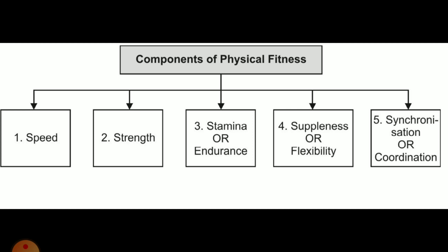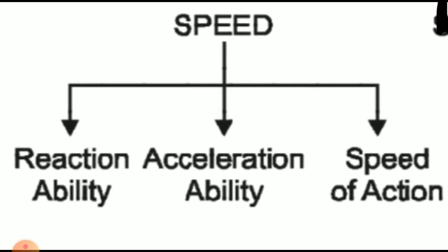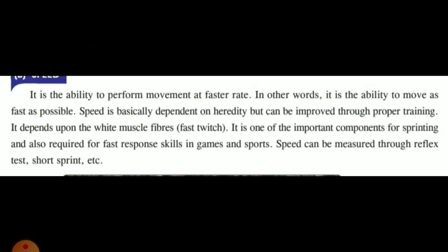Sports that include constant movement like swimming and running improve heart and lung efficiency, whereas gymnastics improves flexibility. We will discuss these five components. The first component is speed. Speed may be defined as the ability or capacity of an individual to perform a movement of the same pattern at a faster rate. In short, speed is the ability to move the body as fast as possible, especially in running.